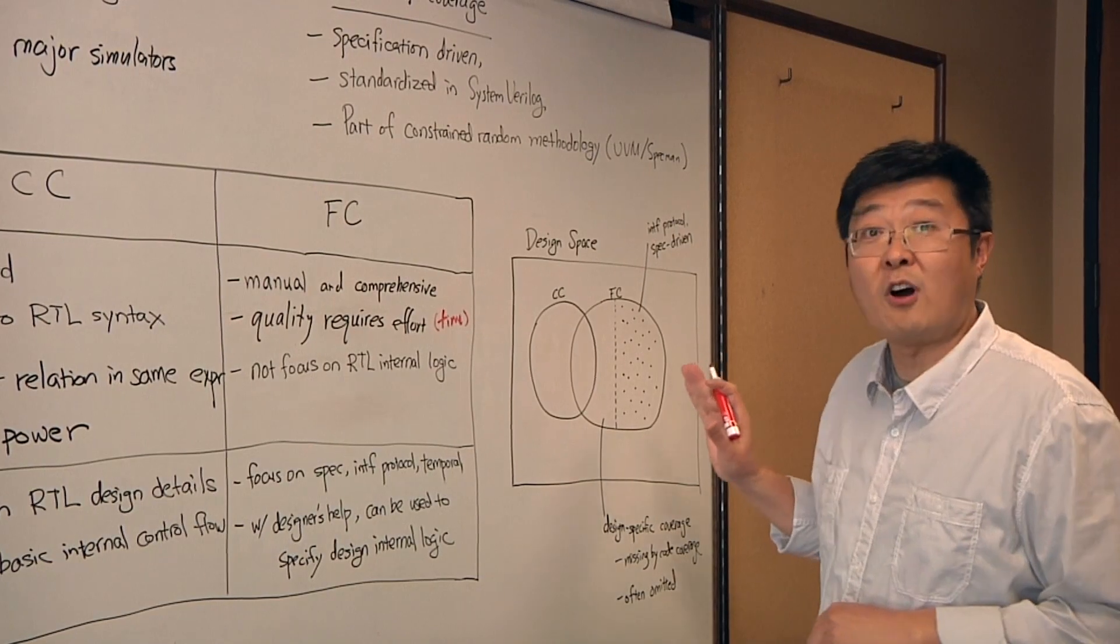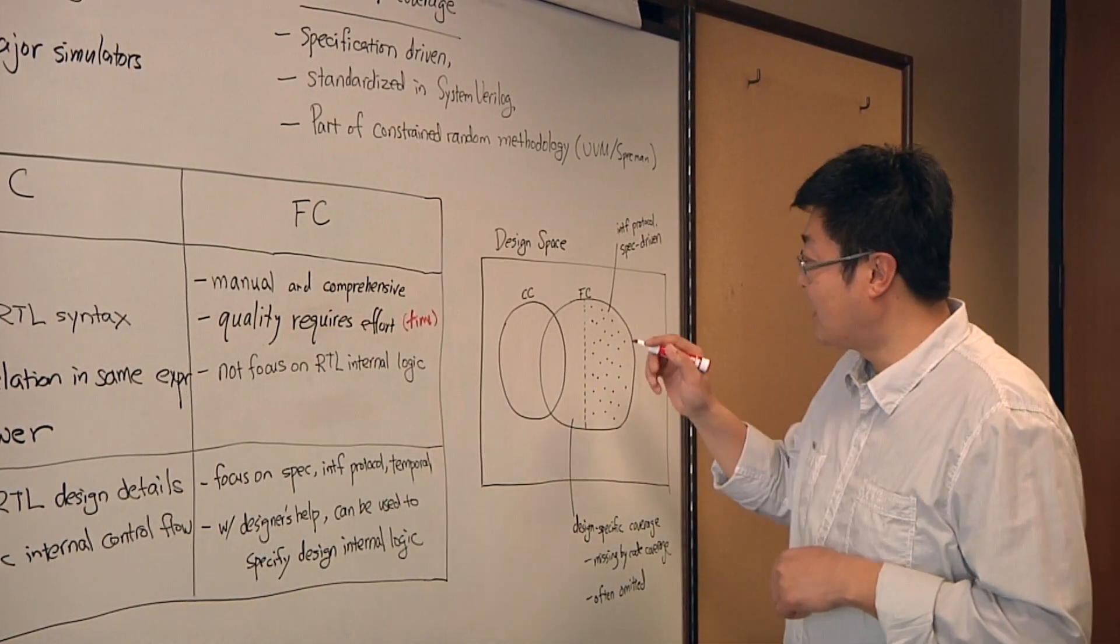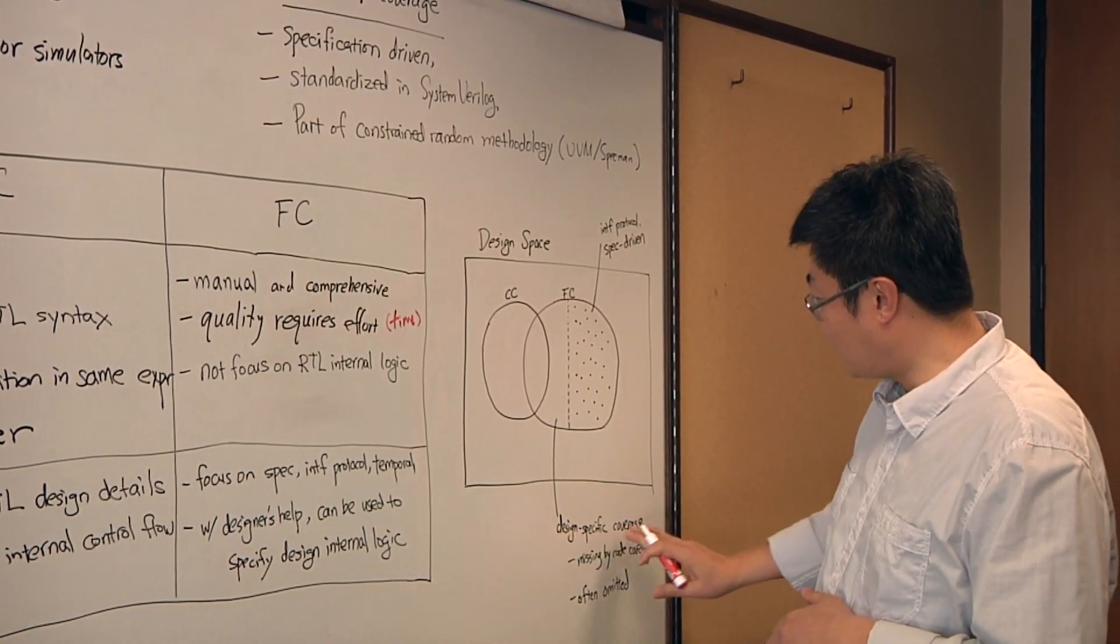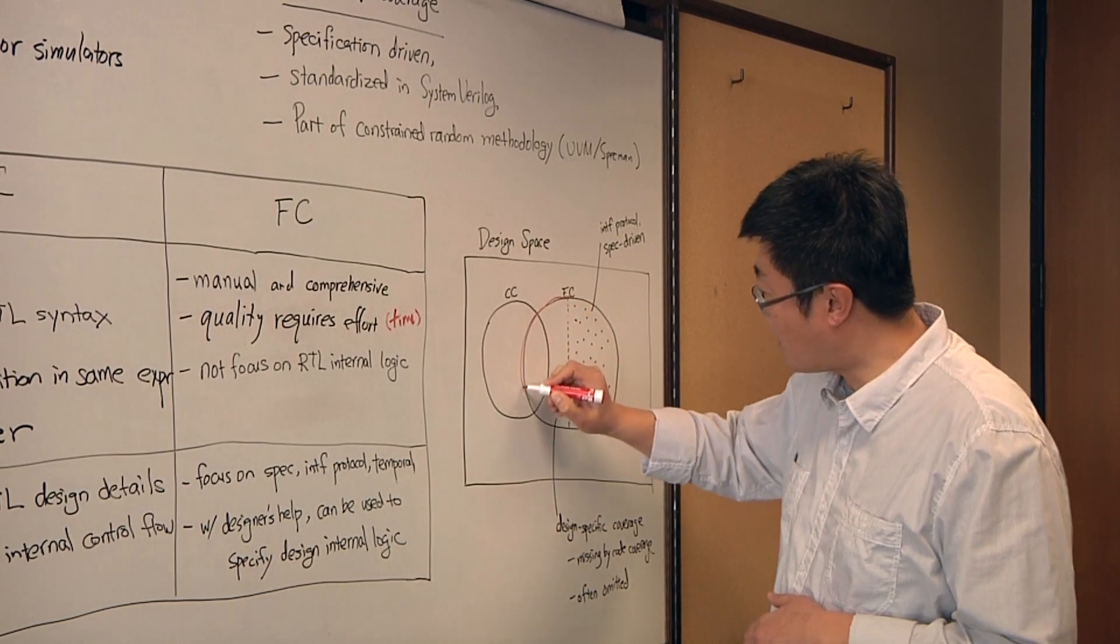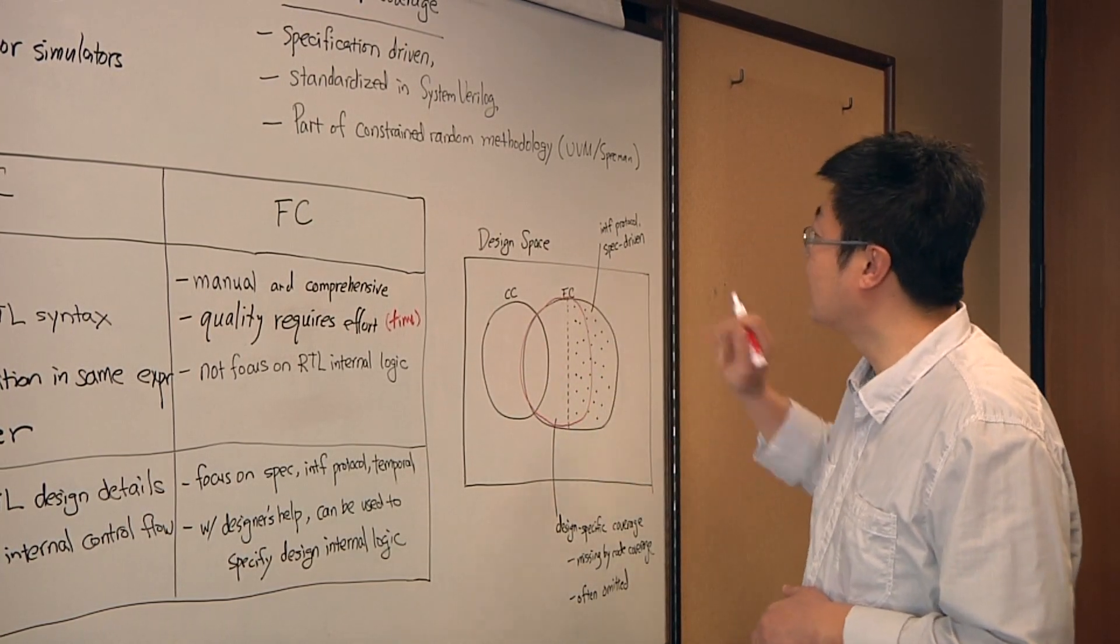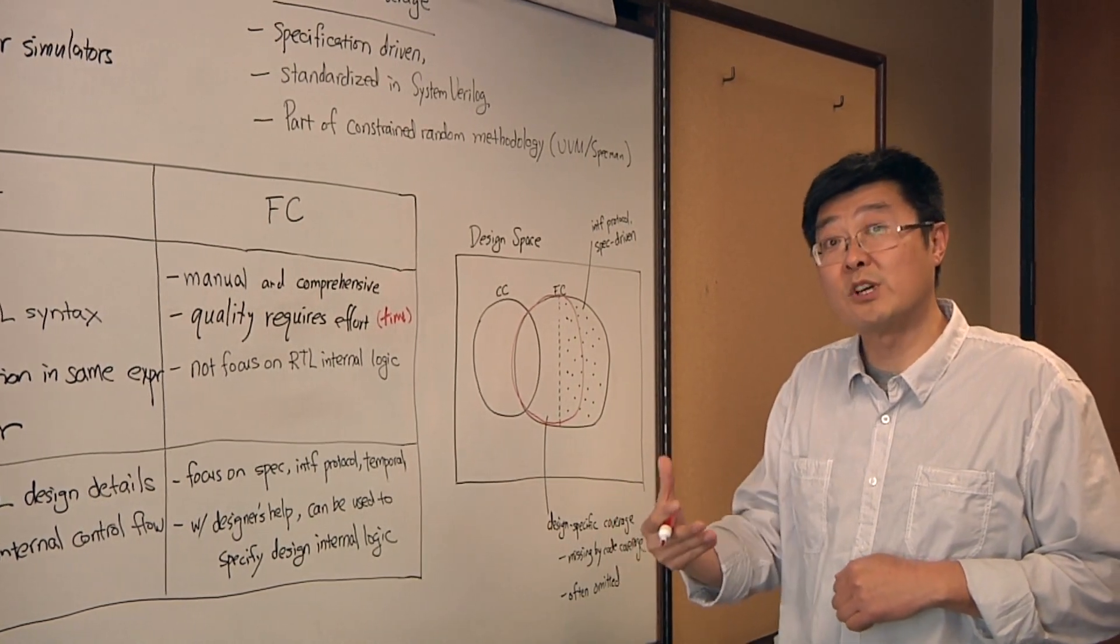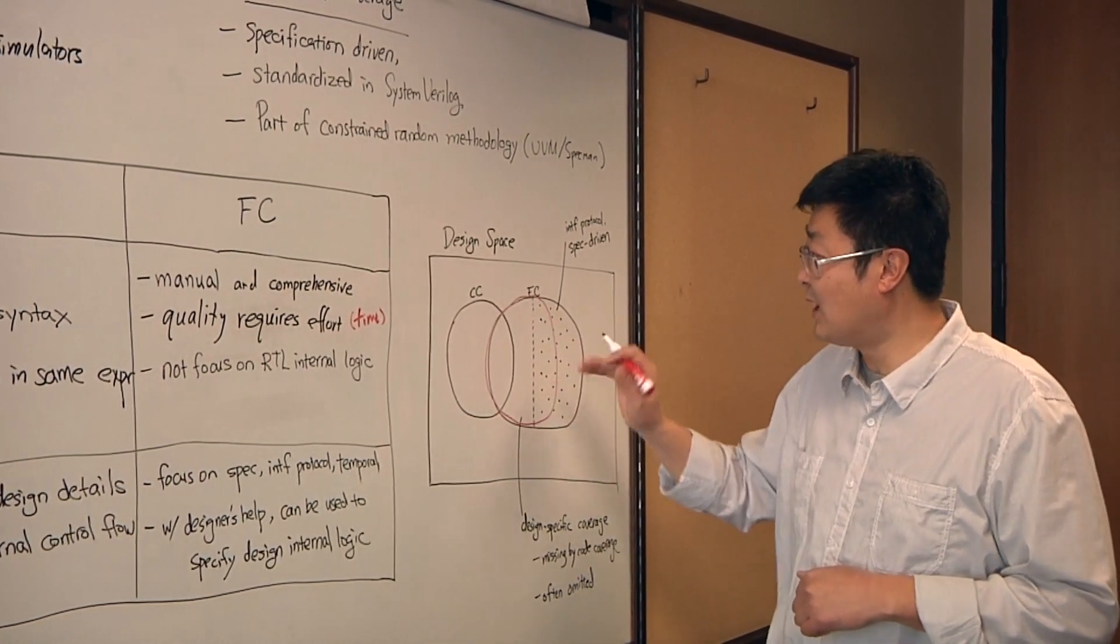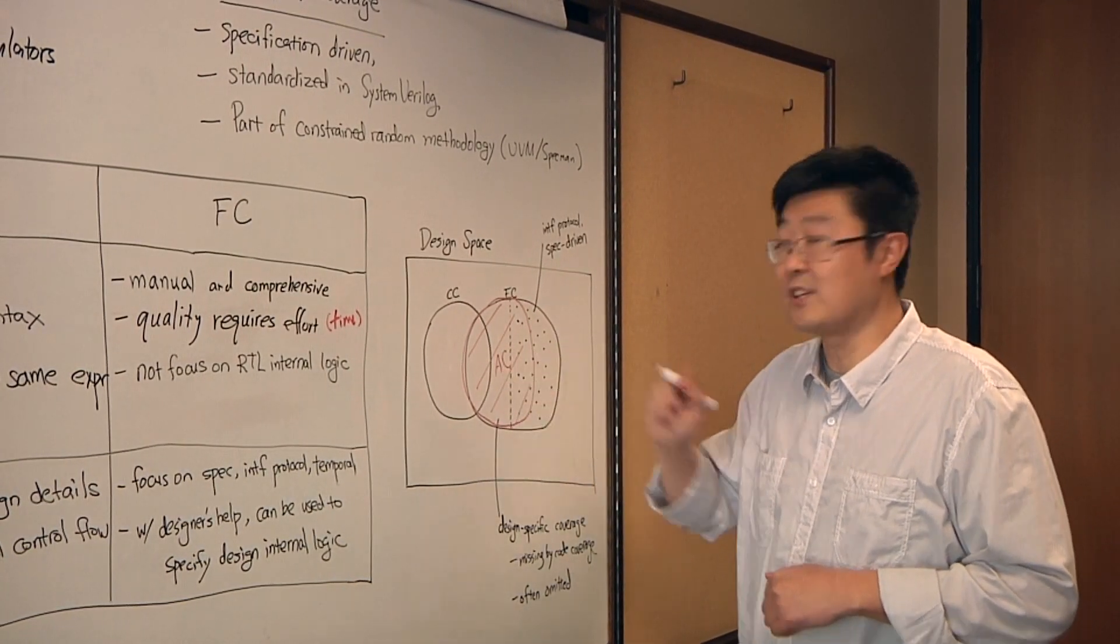It also has the essence of using internal signals to describe internal design features. Let's come to this design space graph. Let me draw my understanding of assertion coverage space. It will be similar to this design-specific coverage, so therefore it will cover this part. At the same time, it will cover part of the specification-driven part, because you can write interface protocols as well as temporal behaviors. Therefore, this will be my assertion coverage.